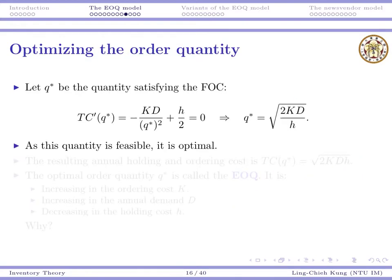If the function is convex, then let q* be the quantity satisfying the first order condition. q* would be the square root of 2KD/h. This is an analytical solution—given symbols for parameters, we can express an optimal solution as a function of symbols. As this quantity is feasible and positive, and it satisfies the first order condition for a convex function, it is optimal.